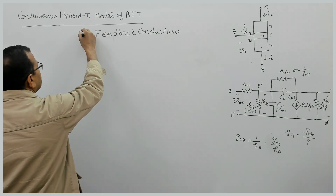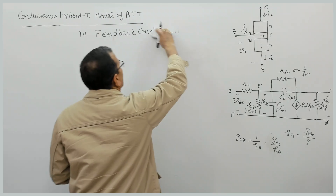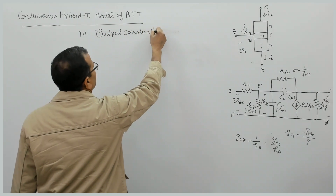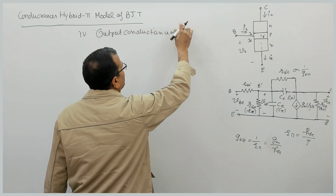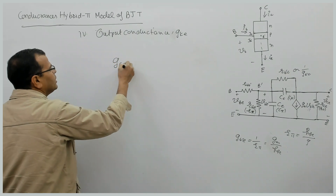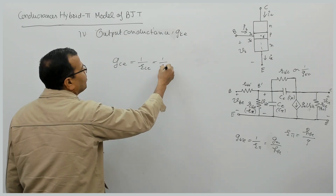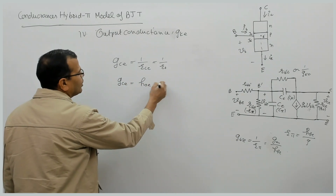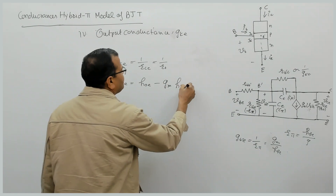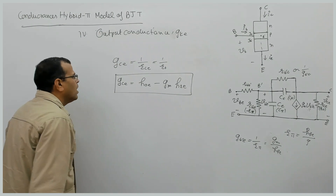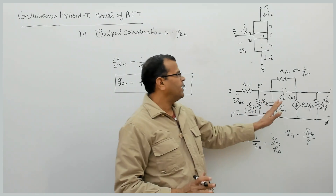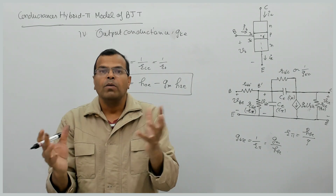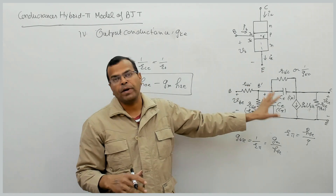The fourth conductance is the output conductance of the hybrid pi model. Output conductance GCE is equal to 1 by RCE, which is equal to 1 by R0. The expression is Hoe minus Gm into HRE. This is the expression of output conductance of the hybrid pi model. Again, every parameter is related with transconductance and H parameters — meaning if you have the small signal model parameters, you can determine the high frequency model parameters of the BJT.